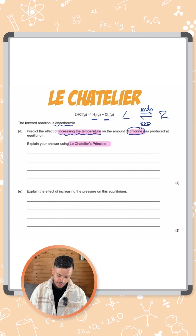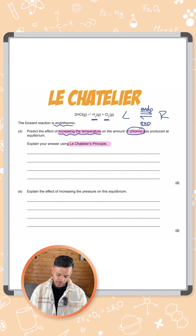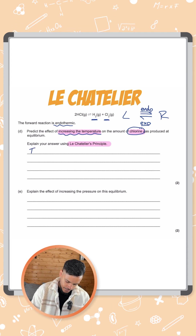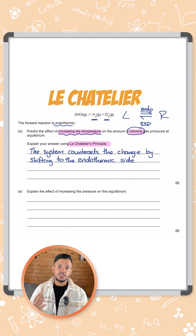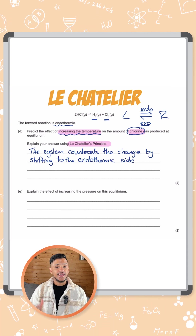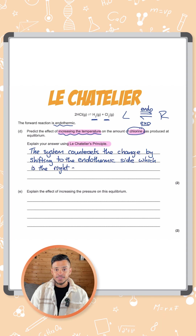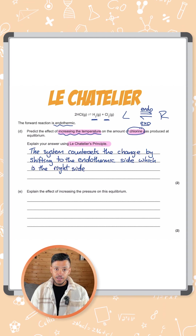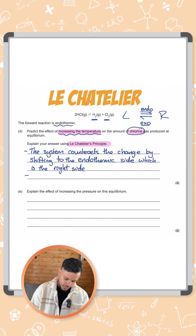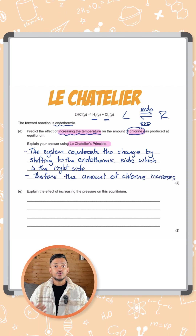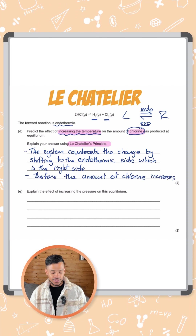For this two-mark answer, we can first say the system counteracts the change by shifting to the endothermic side, which is the right side of the reaction — that's one mark. Therefore, the amount of chlorine increases.